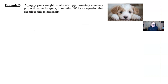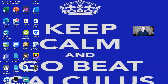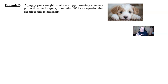Now let's look at our last example — it's about puppies! A puppy gains weight w at a rate that is approximately inversely proportional to its age t in months. Write an equation that describes this relationship. You don't have multiple choice options here, so think about this from scratch. Pause the video, work it out using your prior knowledge, and then check it against my answer.